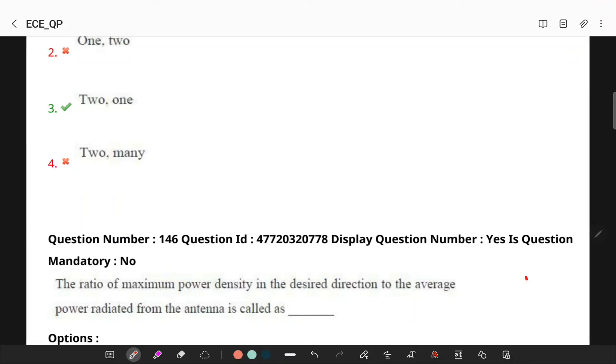Today, let's solve questions related to advanced communication systems in AP ESA 2021 question paper. So, let's start with question number 146.